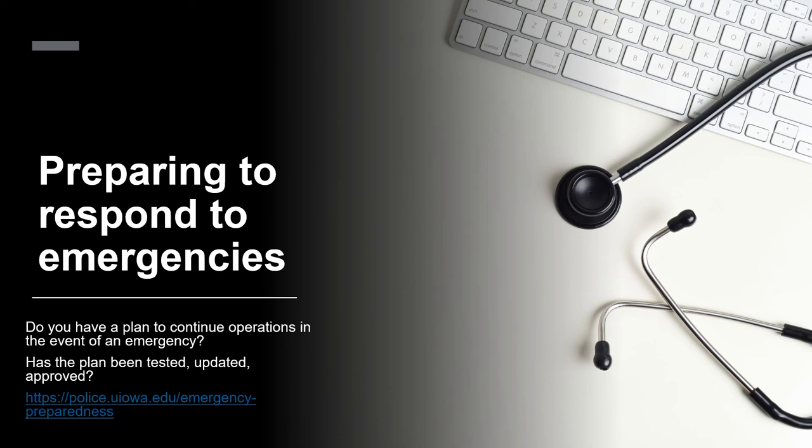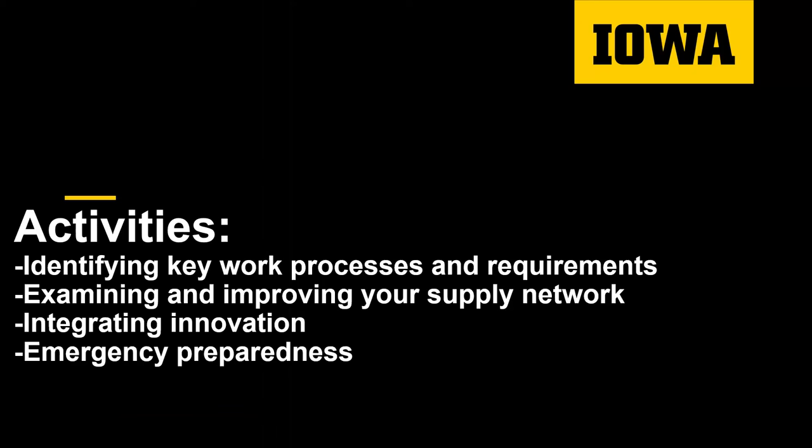Your unit should develop a plan to respond in the event of emergencies, regularly update that plan, and test it with support from the University of Iowa's Emergency Preparedness Office. That is all for Module 6 — your processes for designing, managing, improving, innovating, and protecting your operations are important for the success of your unit. There are four activities shown here with this module that will help your unit think through these important issues. Thank you for watching!